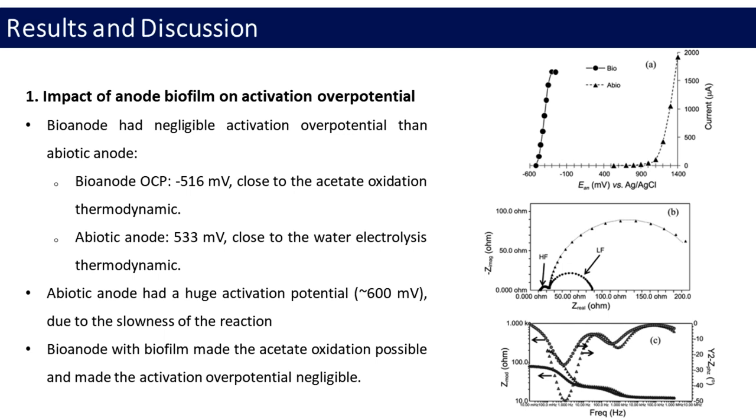Open circuit potentials, OCPs, of anodes when current equals 0 were 533 mV for the abiotic anode and 516 mV for the bioanode, and their difference was 1049 mV. This difference is increased to 1700 mV when current produced more than 100 microA. Therefore, bioanode had negligible activation over potential than abiotic anode.